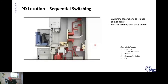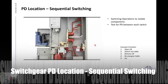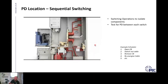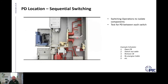Sequential switching is the final step. Generally, PD is detected on switchgear, and if time of flight has not been done you may skip straight to switching operations. If time of flight has been done, you've narrowed down where the PD may be coming from, but you'll still use switching operations — isolating different components of the switchgear and retesting for PD between each test.